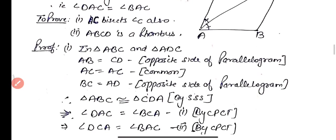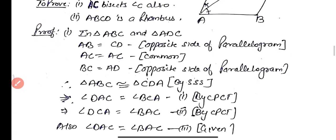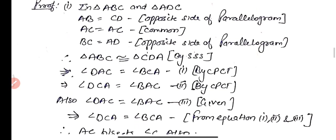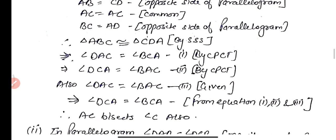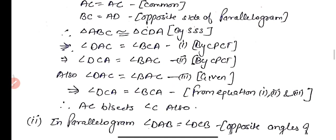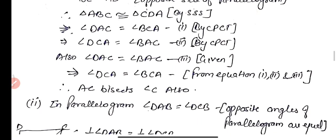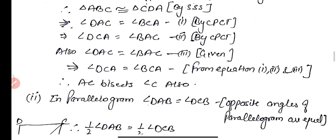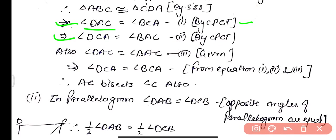So triangle ABC is congruent to triangle CDA by SSS congruency. By CPCT we can write angle DAC equals angle BCA, and similarly angle DCA equals angle BAC — these are corresponding parts of congruent triangles.